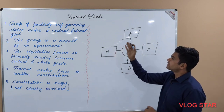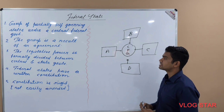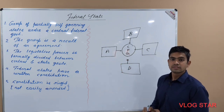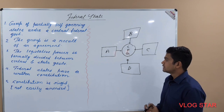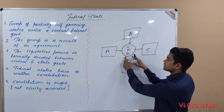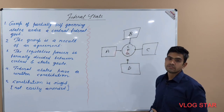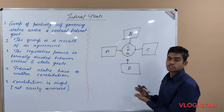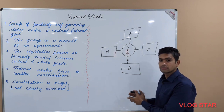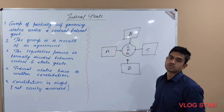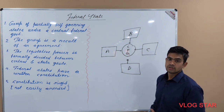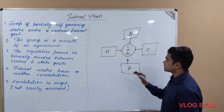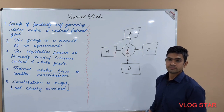We can summarize the federal state in five points. First, a federal state is a group of partially self-governing states under a central federal government. Second, this grouping is the result of an agreement. Third, legislative powers between the central government and constituent states are properly divided. Fourth, there is always a written Constitution to prevent confusion. Fifth, that Constitution is made rigid so the central government cannot easily encroach upon the powers of constituent states.